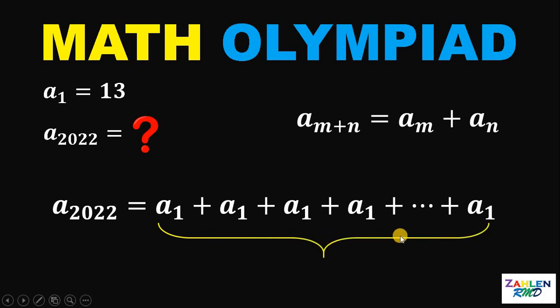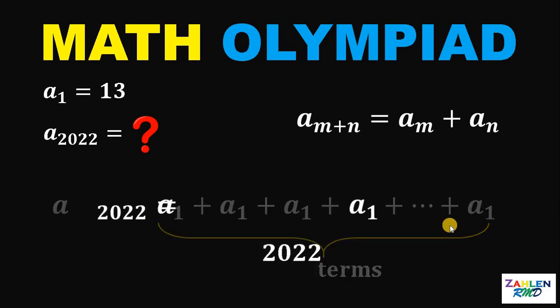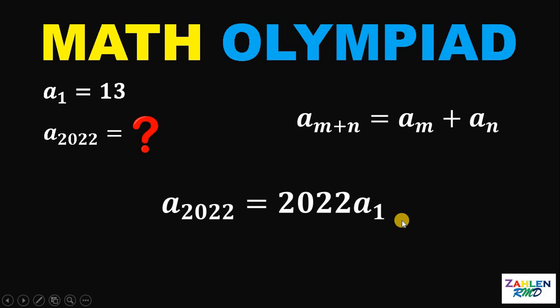Now, the question is, how many a sub 1 are there? Technically, there are 2022 terms in the right-hand side. Therefore, we have 2022 a sub 1. So the right-hand side can be written as 2022 times a sub 1.